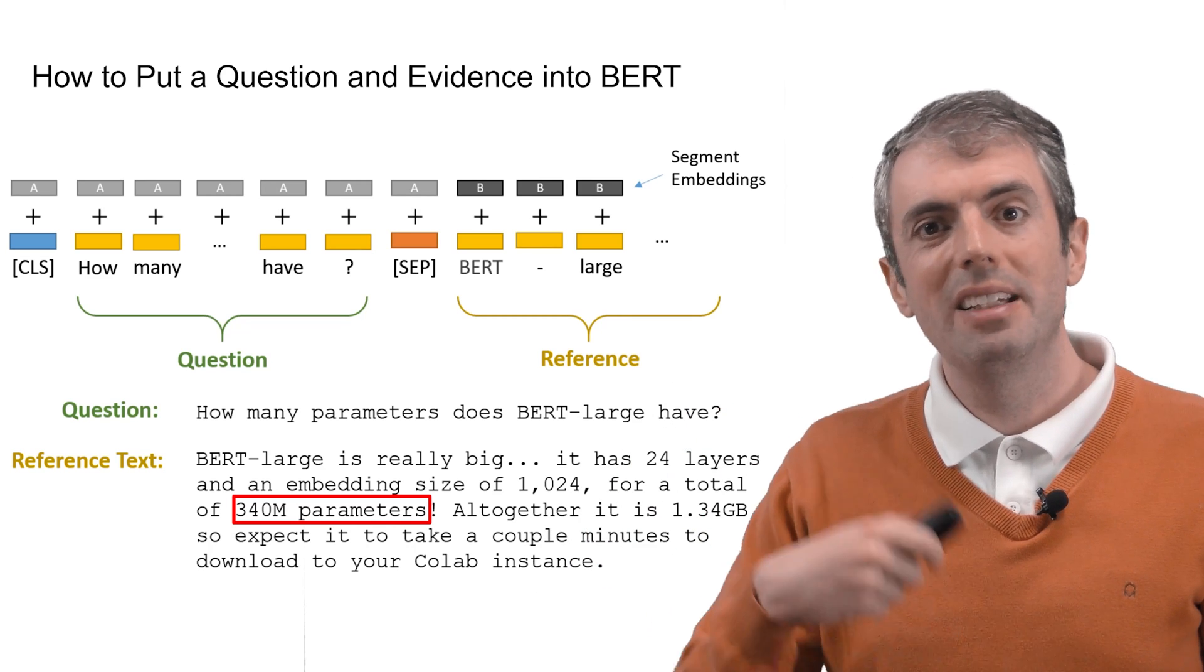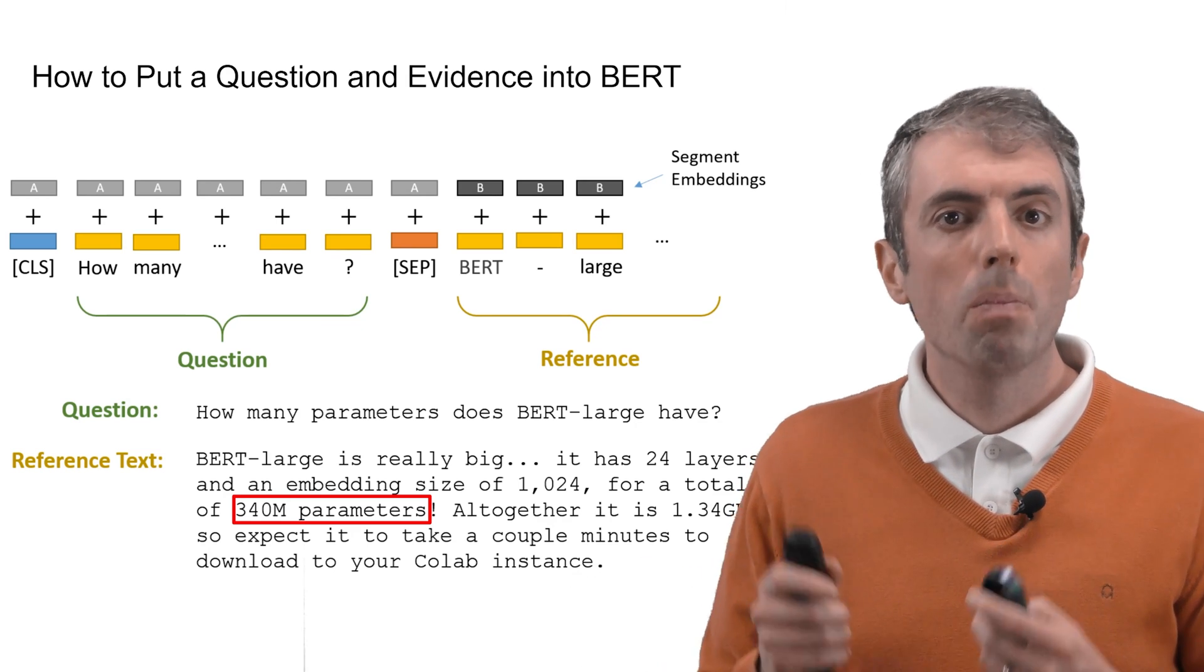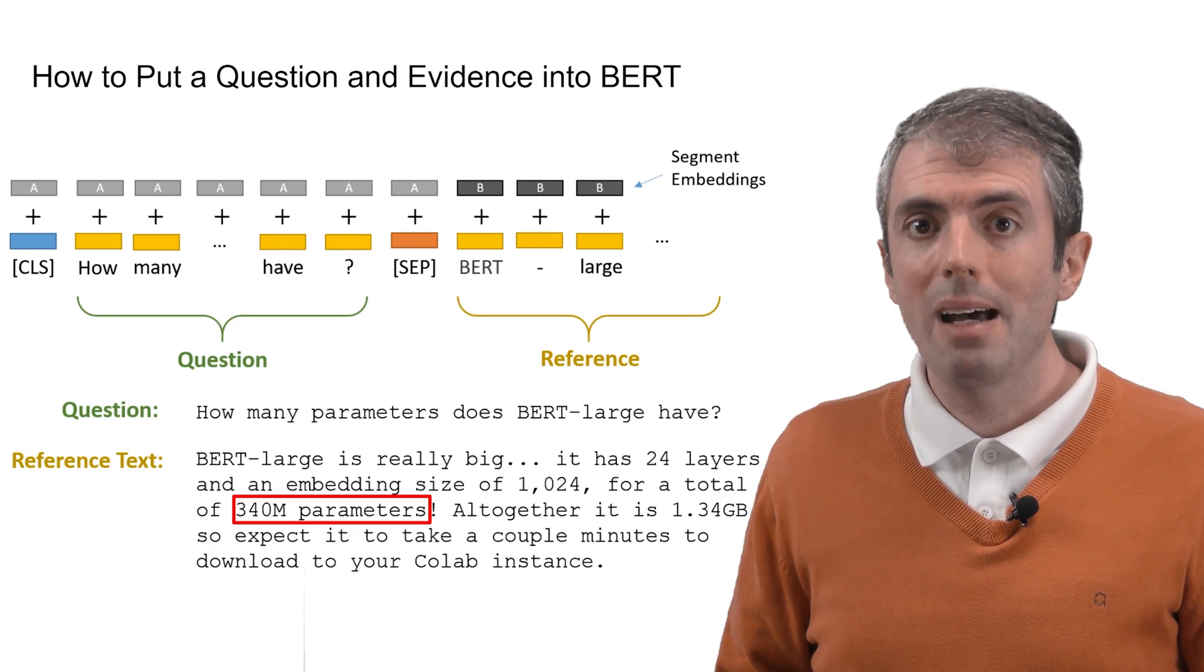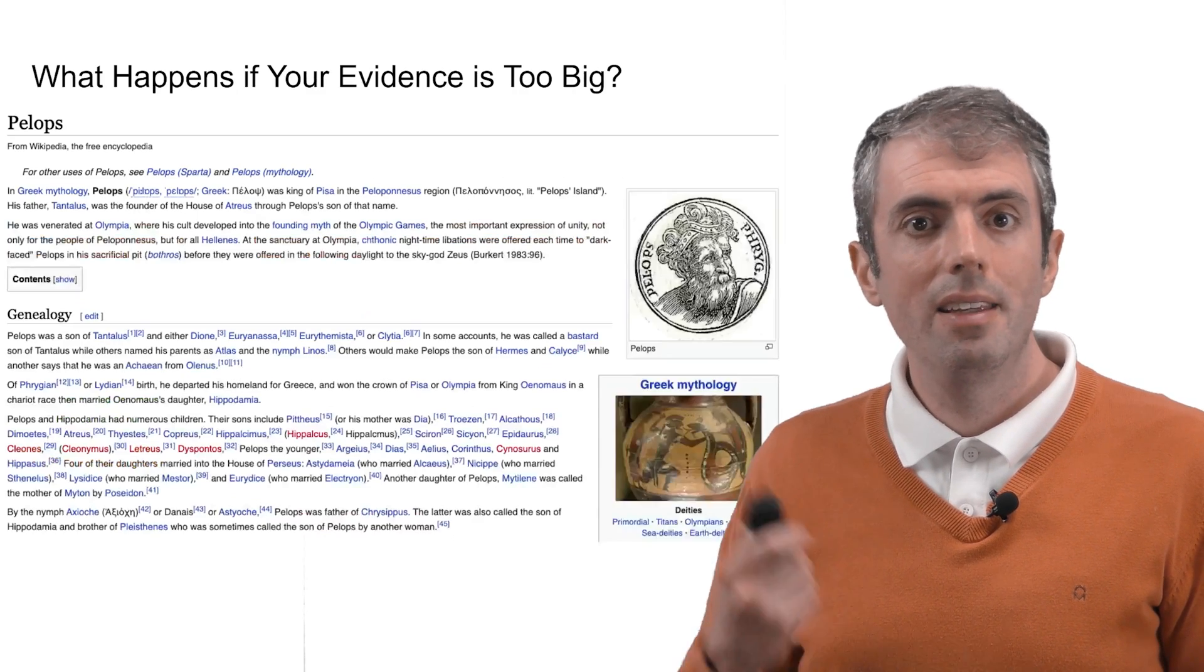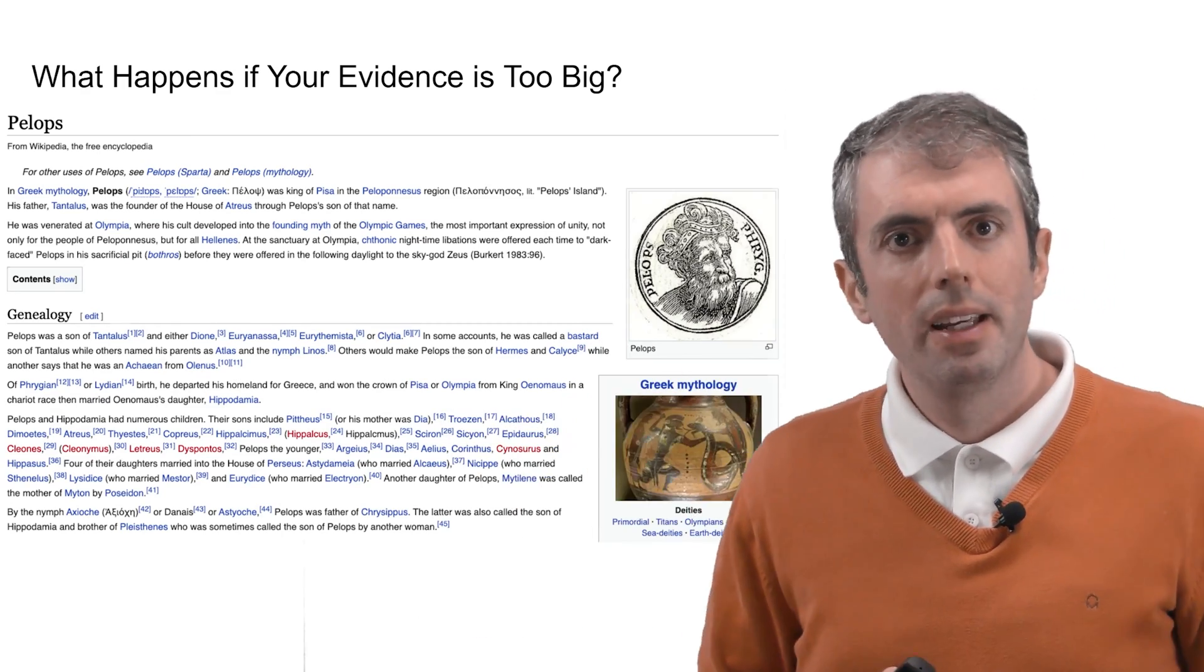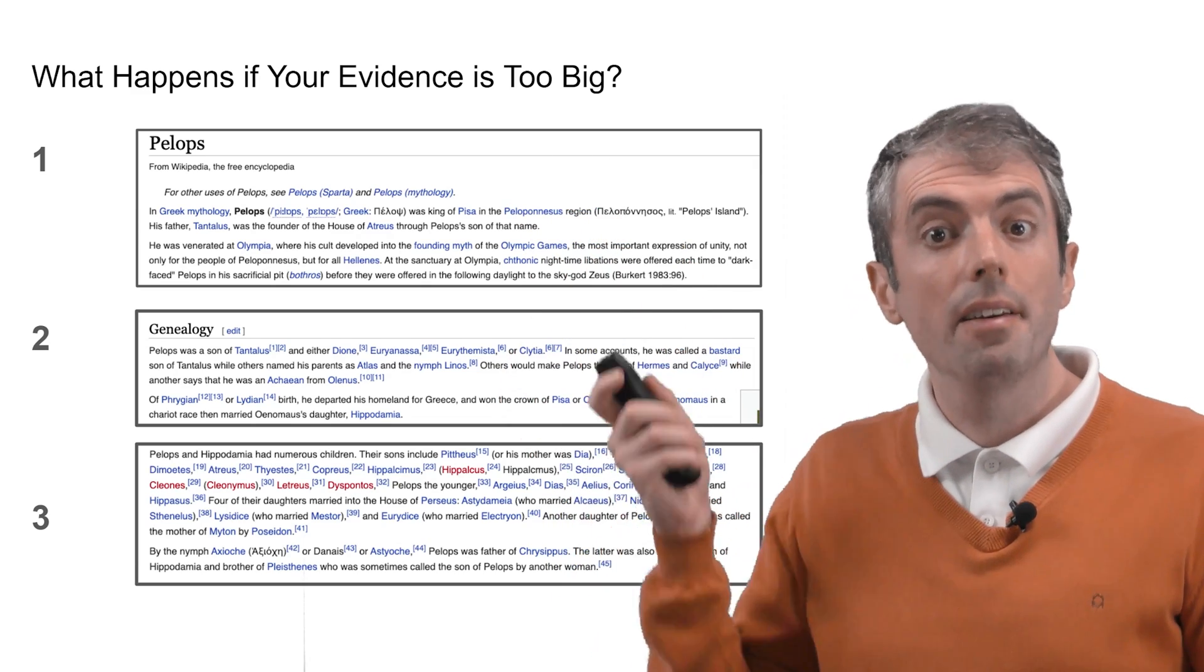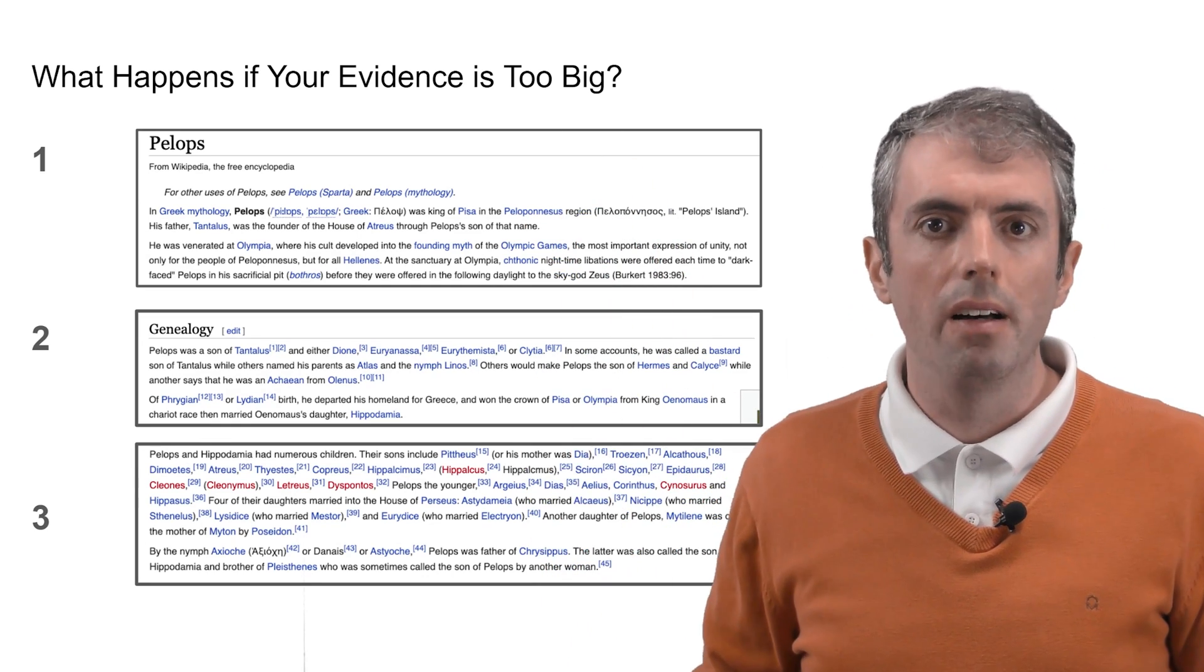What if your reference doesn't fit? One of the problems is that BERT is limited in how big of an input it can process. Unlike an RNN or LSTM that processes text sequentially, BERT looks at everything all at once. And that means it can only handle so much text. So what happens if you have more than 500-ish tokens to look at? Like in this long Wikipedia page about the Greek king Pelops. Well, the answer is to just cut up Pelops. So instead of having one piece of evidence, you'll now have a dozen. Then you can put the question alongside each of these pieces of evidence, and you'll need to look for the start and the end of the answer in each of these pieces of evidence.